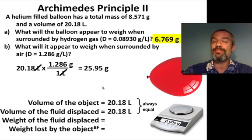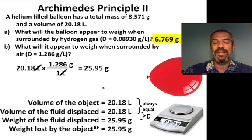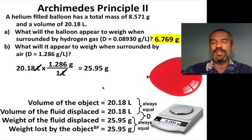and get 25.95 grams for the weight of the air that's being displaced. Those, again, related by the density of the air. Weight loss by the object has to equal that. Those are always equal, that's Archimedes' principle.